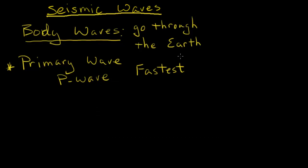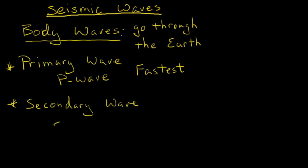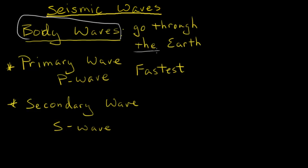The P wave, or primary wave, is the fastest. The next type of wave is the secondary wave, or S wave, and it is slower than the primary wave — about half its speed. Both the P and S waves are body waves, meaning they travel through the Earth.